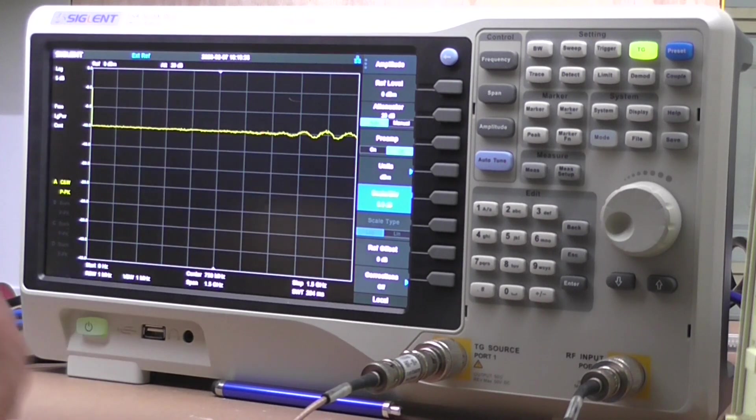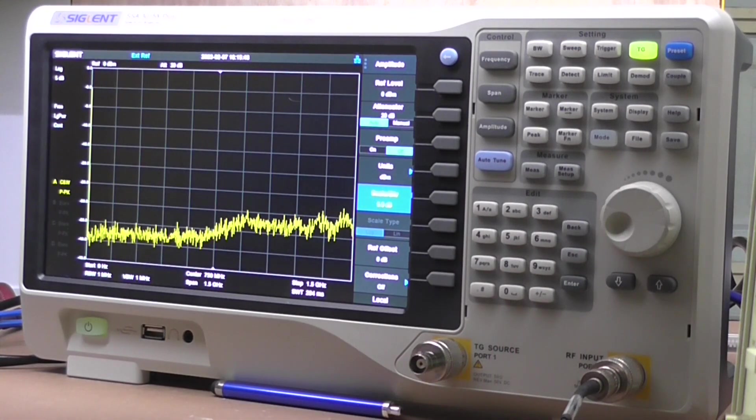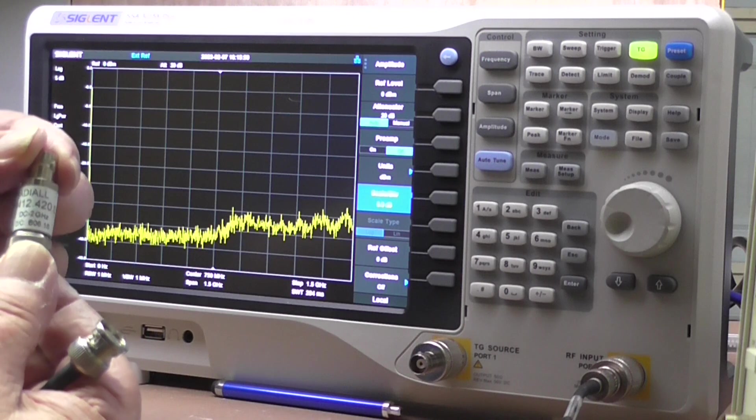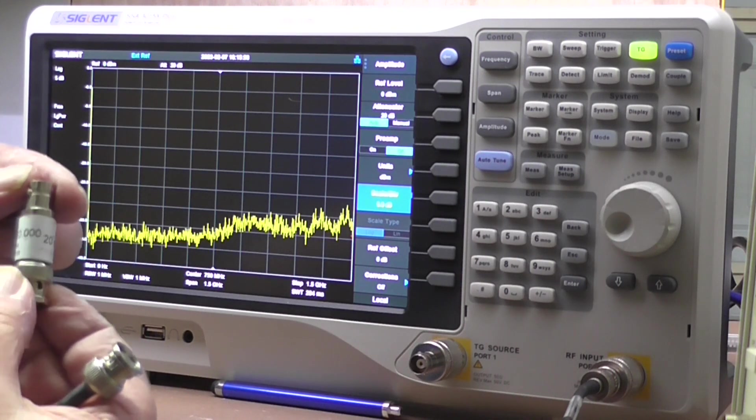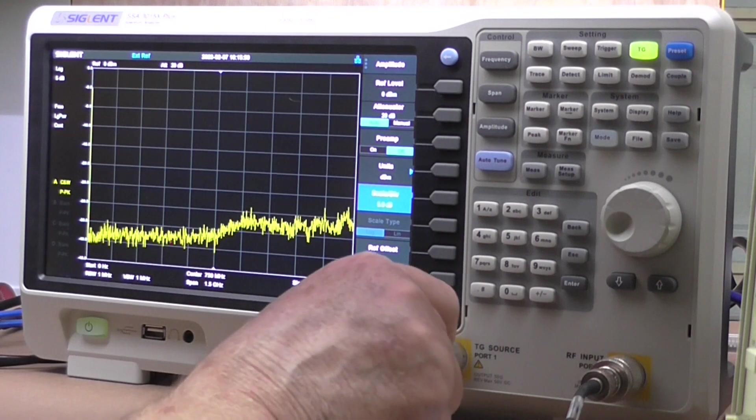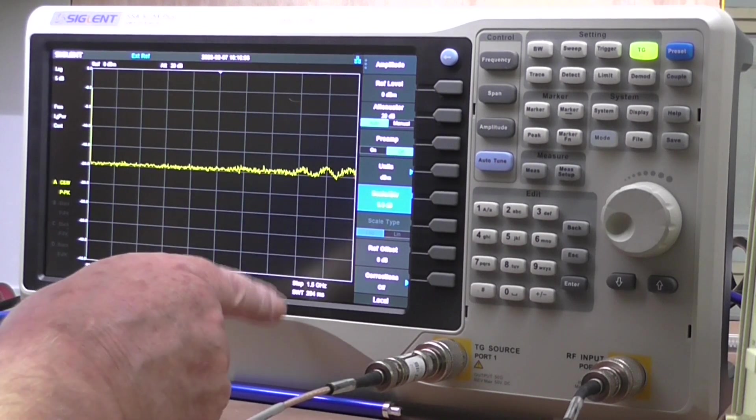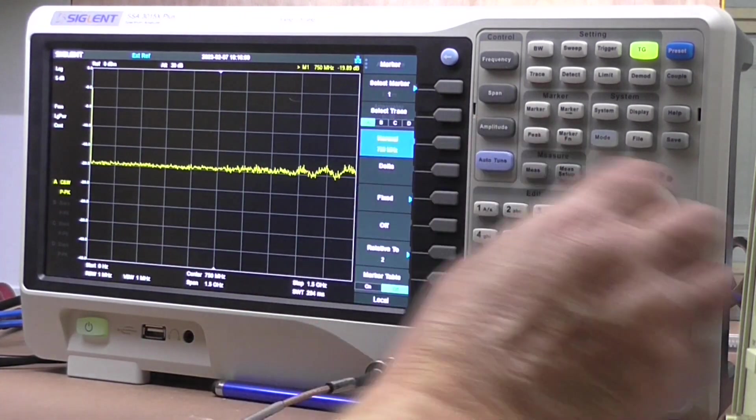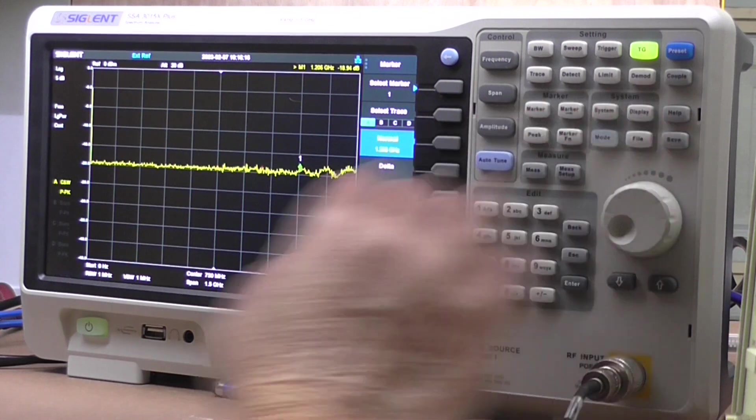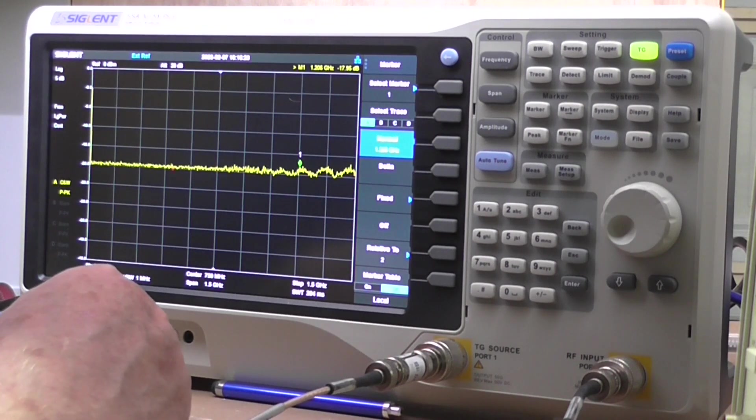Let's just change the amplitude and the scale per division down to five and you can still see quite clearly we're at minus 10. Okay, so that one I'm happy with. Next one we're going to try is a 20 dB and it's supposedly good up to two gigahertz, so we'll have a look and see what we've got here. Plug it in and yes, it's getting a little bit woolly.